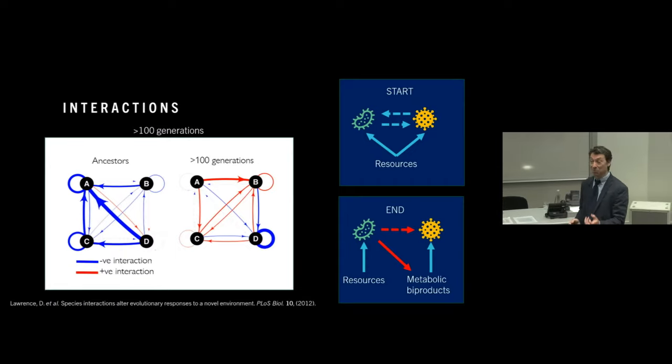Each of the nodes in this network is a species. So we have four species, A, B, C, and D. And the connections between the species indicate the sorts of interactions that are happening amongst them. The blue lines are negative interactions, so those bacteria are fighting. And the red lines are positive interactions, those bacteria are helping the other. And this is what it looks like at the beginning of the experiment. It's a repeat of what happened in the other experiment. The lines are all dark blue because they're all fighting with each other. We take the bacteria from the natural environment, we put them in a tube and they fight.